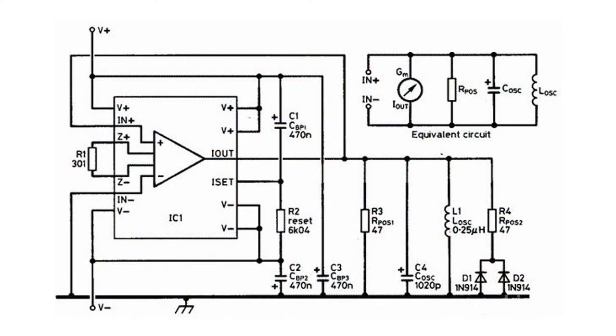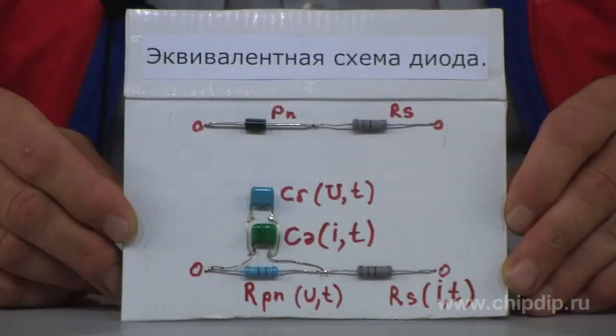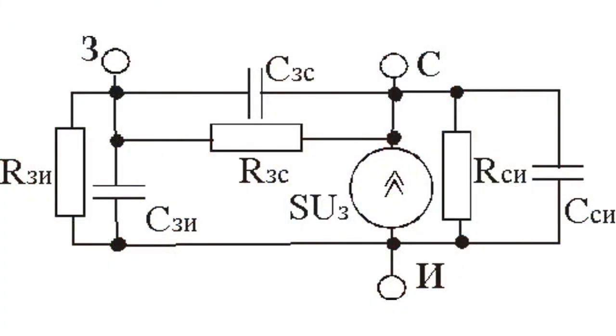Let's look at some examples of equivalent circuits of electronic components. Here is an equivalent circuit of a P-N junction field effect transistor. The main element of the circuit, which characterizes the amplifying properties of the device, is a dependent current generator SUG.